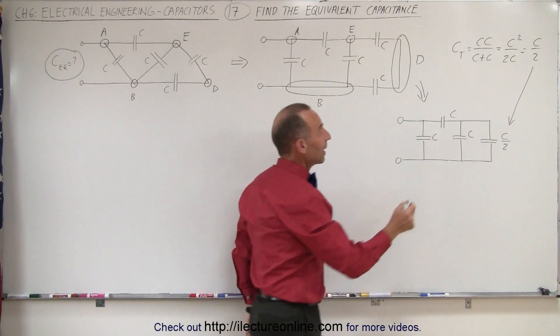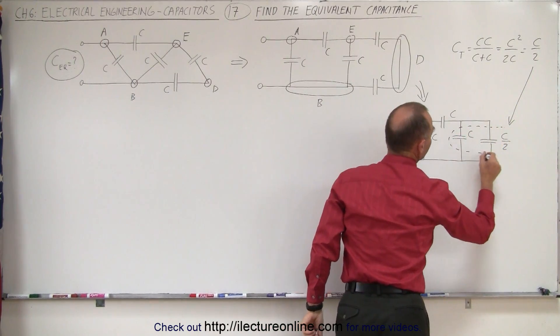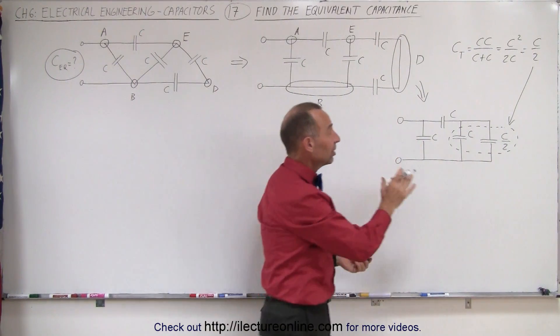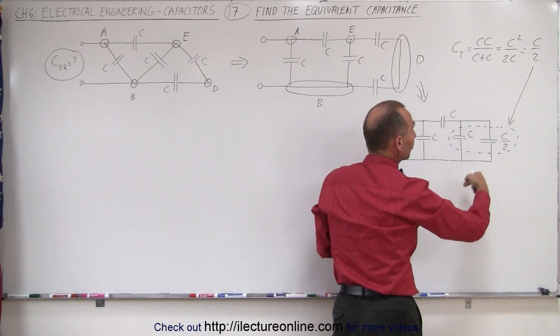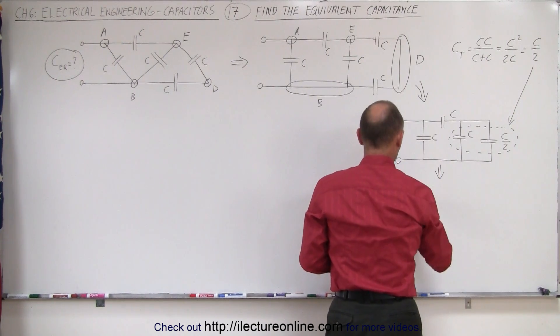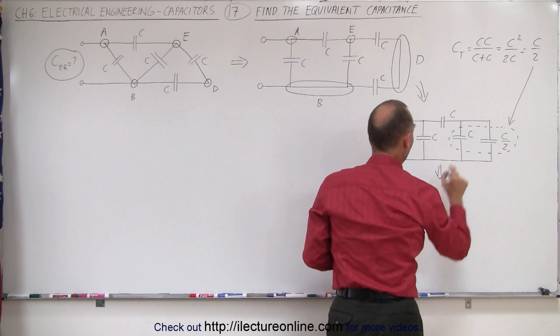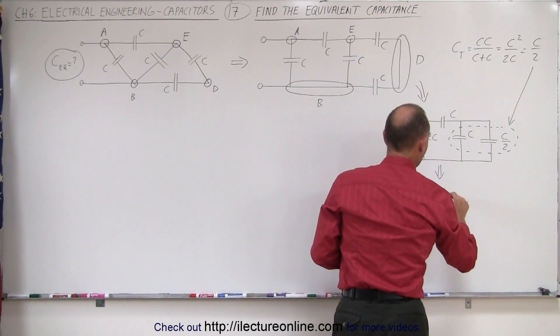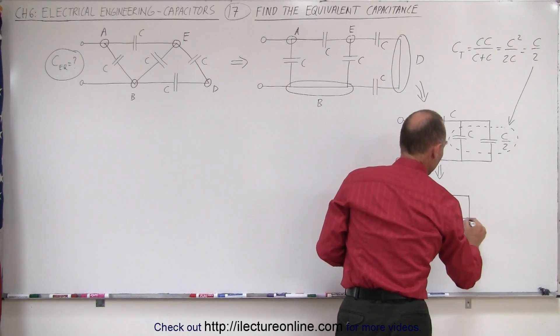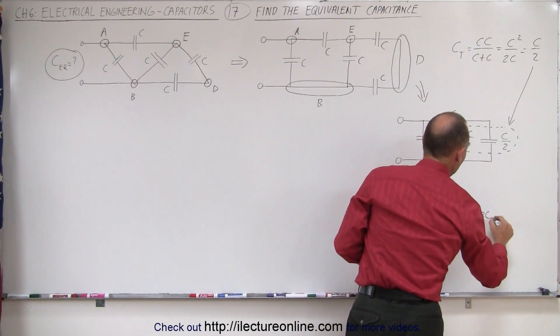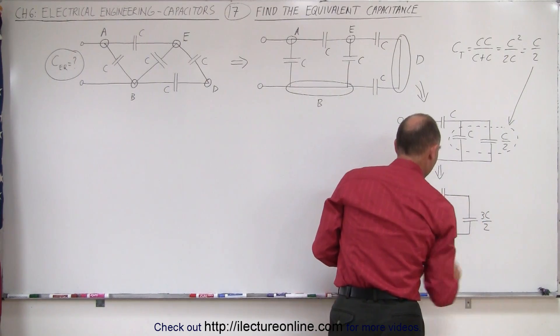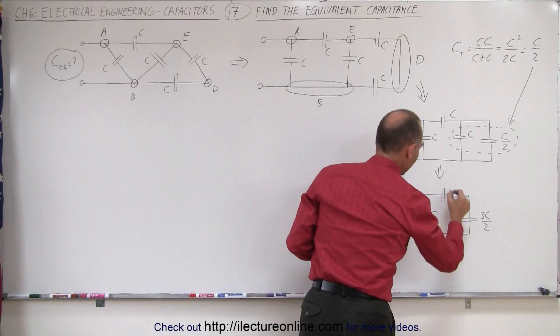All right. Next, I'm going to combine these two capacitors right here. Now these are in parallel. And when you add capacitors in parallel, you simply add them together. So that becomes a single capacitor with a capacitance C plus a half C, which is three halves C. So the circuit now becomes the following. I still have this capacitor right here. I still have this capacitor. And now instead of having these two separate capacitors, I will now have a single capacitor. I can draw this one here with the capacitance of 3C over 2. Three halves C. And then I can combine this right here. All right. And I can label these. They're still C and C.